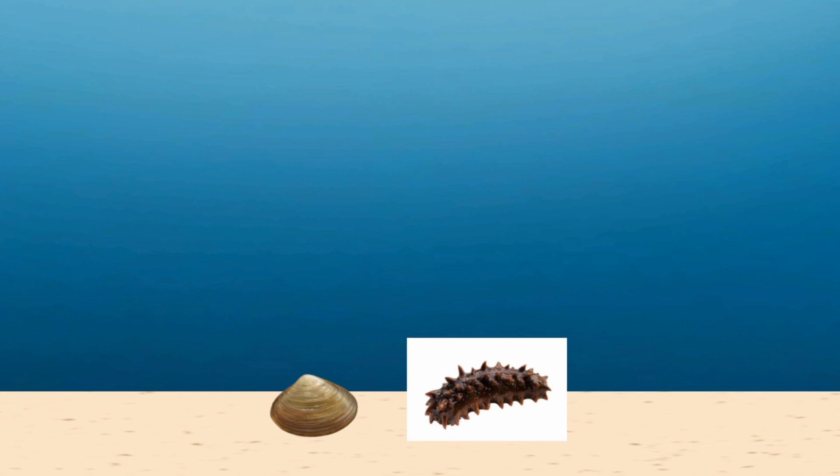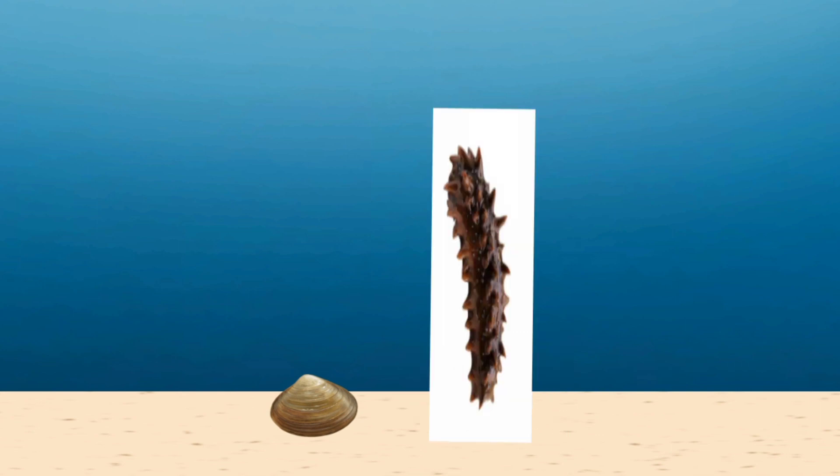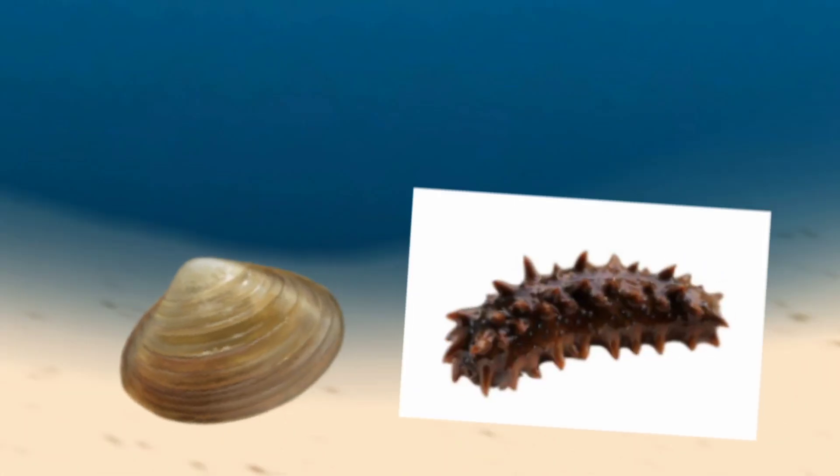A mollusk swims up to it. No, he doesn't swim up. He was already there. And a sea cucumber is standing next to him. They don't stand. They grow in one place, but they do lean.